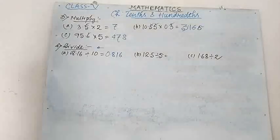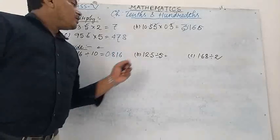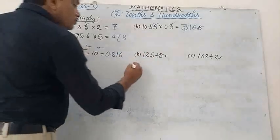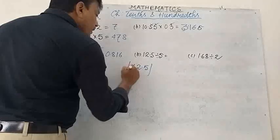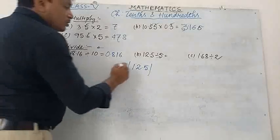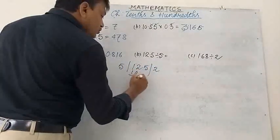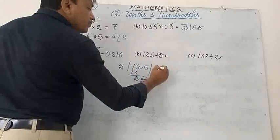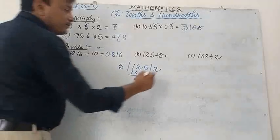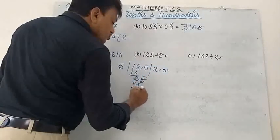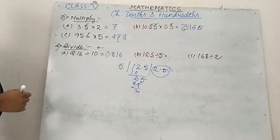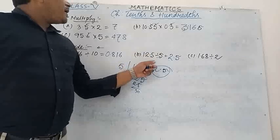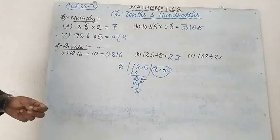Number B: 12.5 divided by 5. Do the normal division: 5 goes into 12 twice (remainder 2), then bring down 5 with a point noted here. 5 goes into 25 five times. So the result is 2.5. 12.5 divided by 5 equals 2.5.